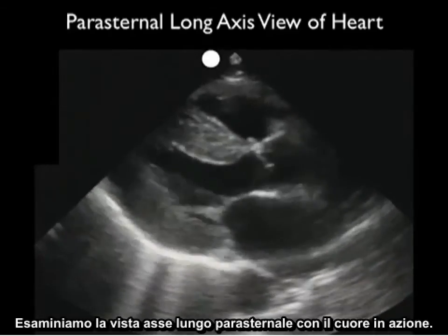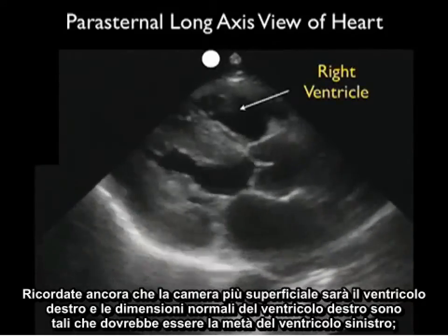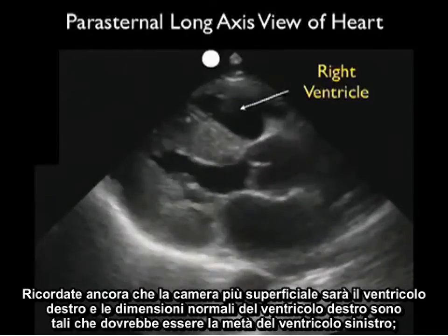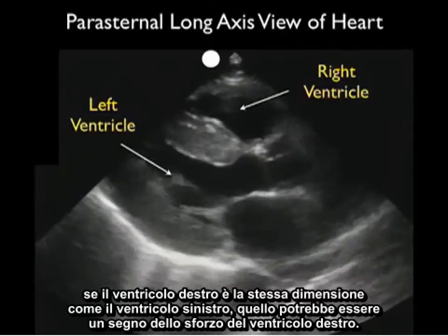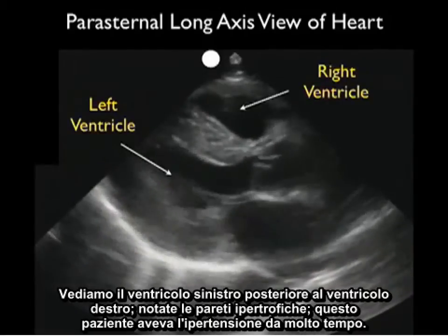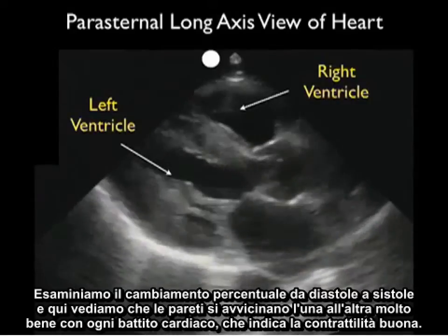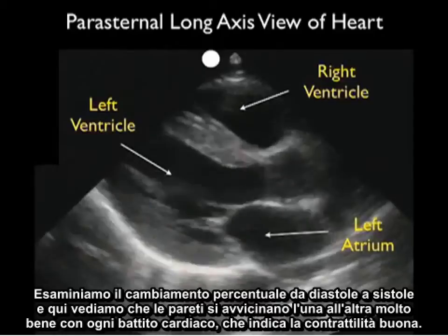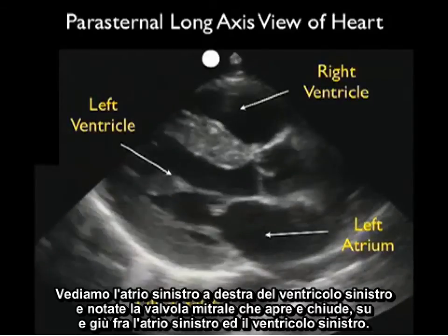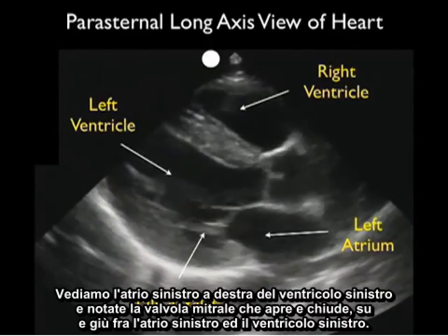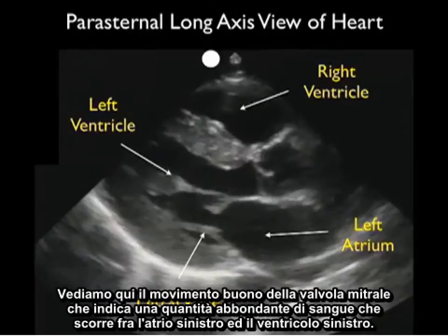Let's now take a look at the parasternal long axis view of the heart in action. The most superficial chamber is the right ventricle, and its normal dimensions should be about half the size of the left ventricle — if the right ventricle is the same size as the left ventricle, that could be a sign of RV strain. We see the left ventricle posterior to the right ventricle with its hypertrophic walls; this patient actually had long-standing hypertension. Looking at the percentage change from diastole through systole, the walls come in well with each heartbeat, indicating good contractility. Notice the mitral valve flipping up and down between the left atrium and left ventricle, indicating good blood flow between those chambers.